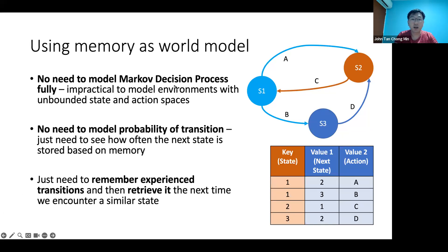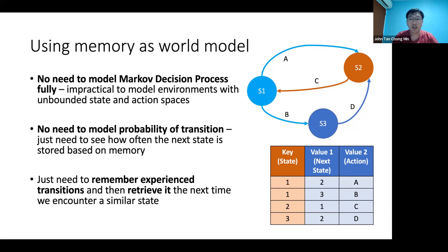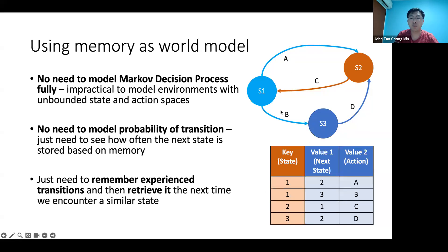The key insight is that we don't have to model the whole Markov decision process fully — we just need to model what the agent is interested in. For example, if I live in Singapore, I don't need to model what it's like in Atlanta unless I travel there. By limiting our MDP to only the local area, we need to model less and learn faster. Also, we don't have to model transition probabilities explicitly — we can just sample memory tuples of state, next state, and action, and estimate probabilities from the proportion of samples. We just store this in a hash table and retrieve it.